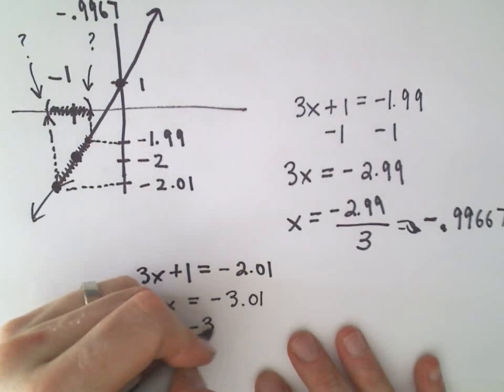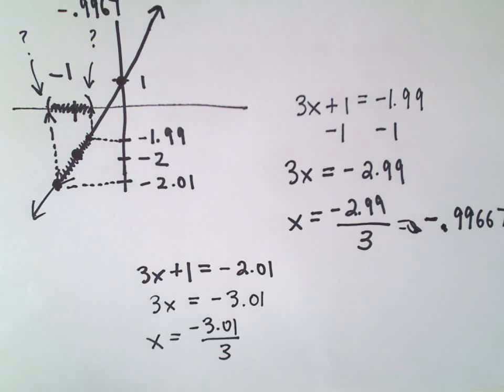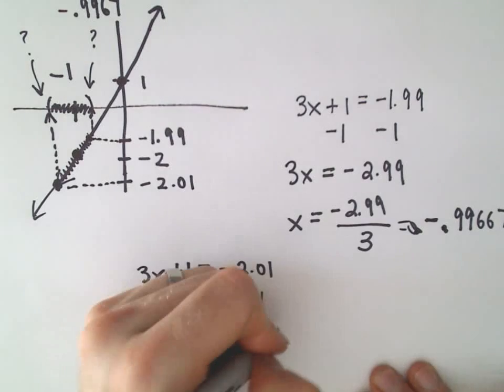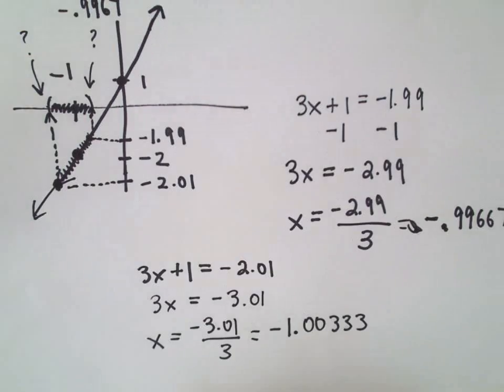Do the same thing as before. We'll divide by 3. So when we take 3 and divide it, excuse me, when we take 3.01 and divide that by 3, I'm getting this to be negative 1.00333, after rounding.